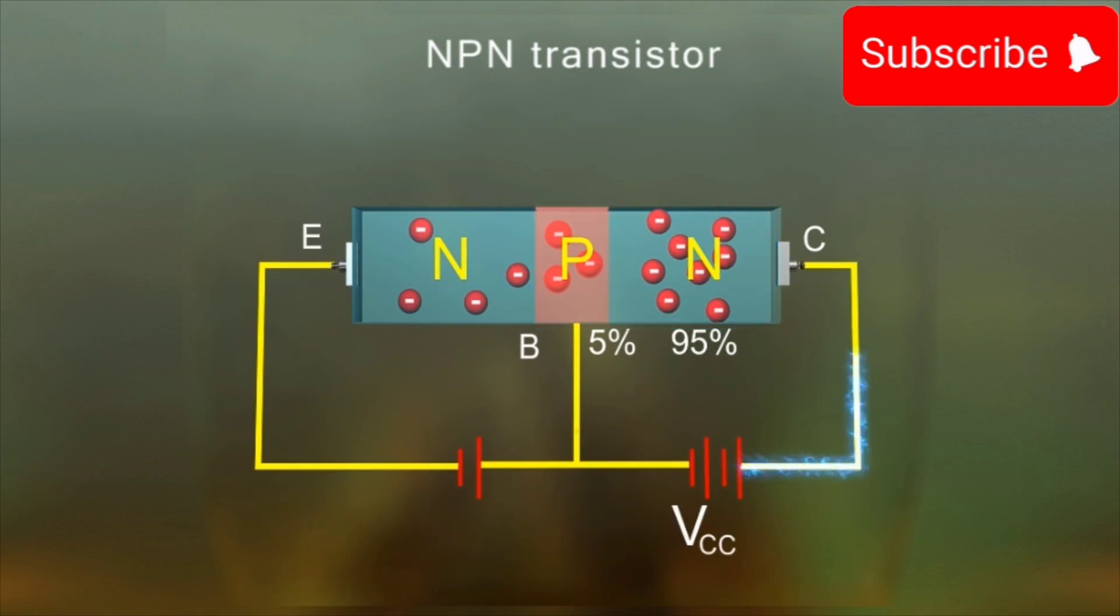The electrons entering the collector give rise to an equivalent current in the external circuit, represented as IC. Simultaneously, for each electron which combines with the hole at the base, one electron is attracted by the voltage VEE to constitute the base current IB.